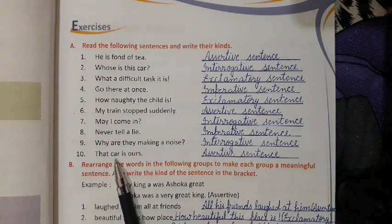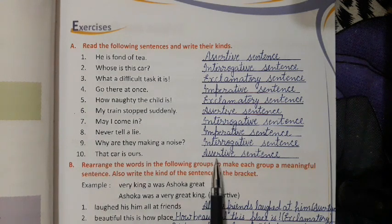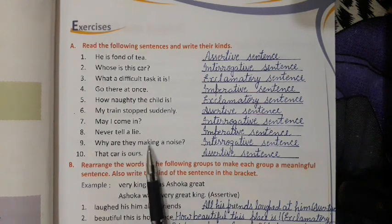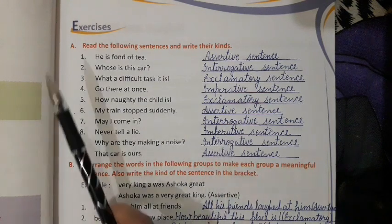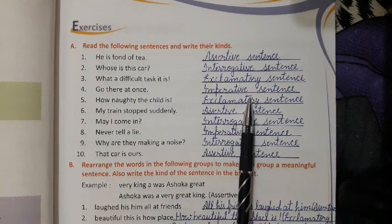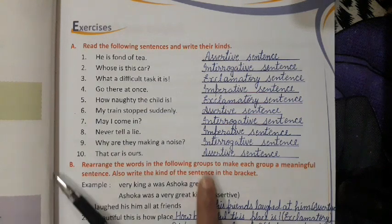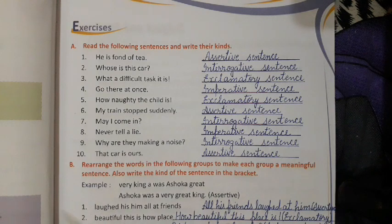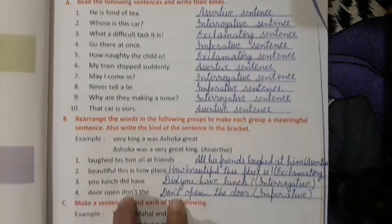Last: 'That car is ours.' This is assertive sentence — simply a statement with a full stop. So Exercise A is complete. I hope it is clear how you will do it in the book. Use pencil when you write, and please do it properly without any spelling mistake. This is the final work, so revise it time to time.